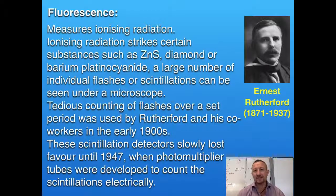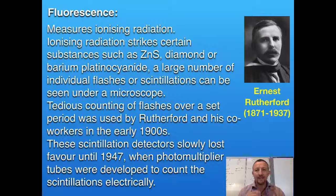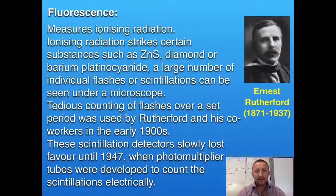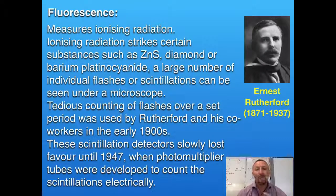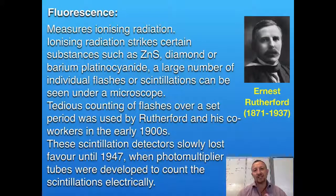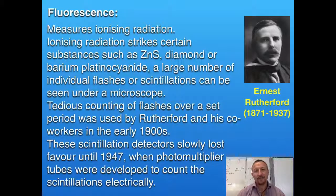This was very, very tedious because it consisted of looking down a microscope and counting these individual flashes. As time goes on, you get tired and it becomes very inaccurate. It wasn't until the 1940s that a photomultiplier was introduced, which allowed the ability to detect each of these flashes and use simple electronics to count the number of flashes per time, which was then related to the radioactivity of the substance.